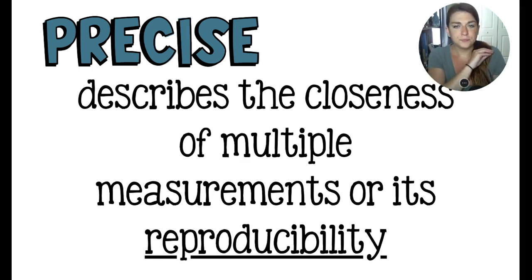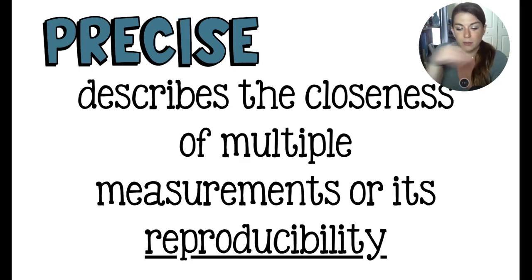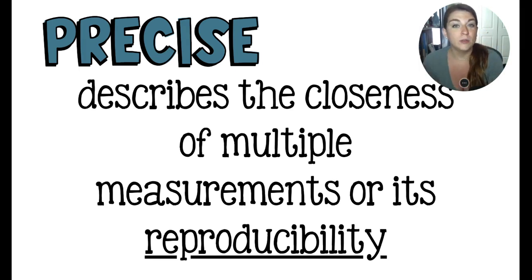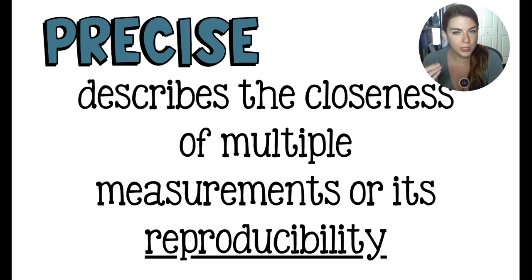If all of those measurements are really close, you know that what you are doing is very reproducible — meaning your second result is very close to your first. It means that the written lab procedure you followed is written very well, because you're able to do the same thing almost exactly over and over again. High precision means you, the scientist, are following the directions really well and the directions are very well written.